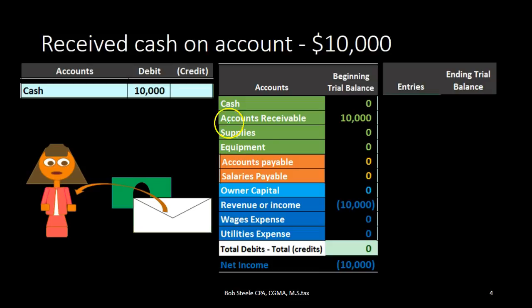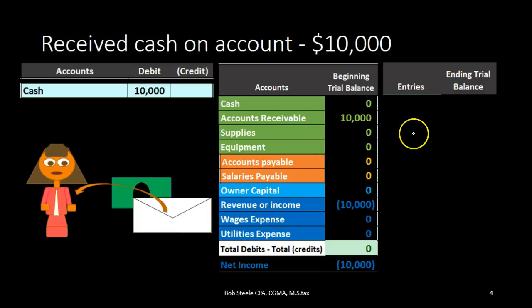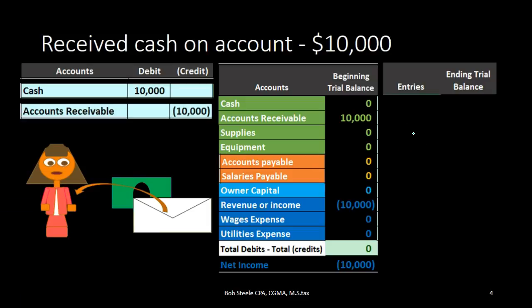The question is: what do we credit? You might be thinking we should credit revenue because that's why we're getting the cash after all. However, we already recorded the revenue in the past because that's when we earned it. When we billed the client, we billed them after we did the work, already recording the revenue and the fact that the customer owes us money in terms of accounts receivable. Therefore the second account will be accounts receivable. It needs to go down because the customer no longer owes us that $10,000, so we're doing the opposite thing to it, which in this case will be the credit.